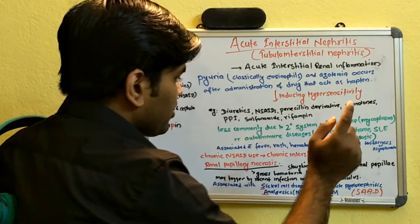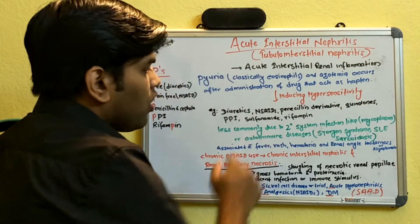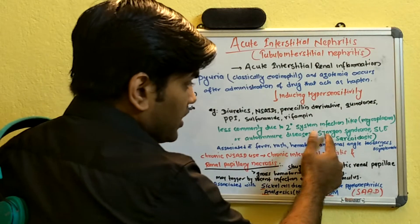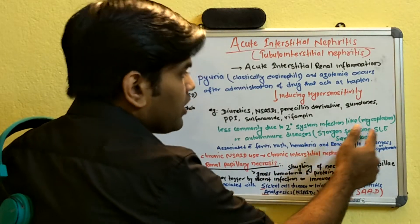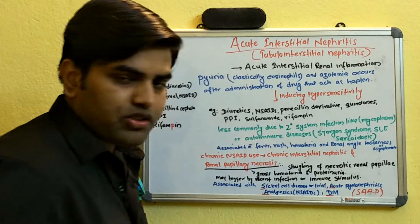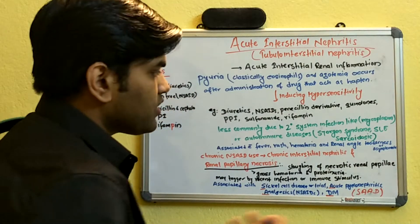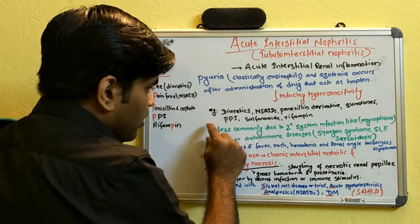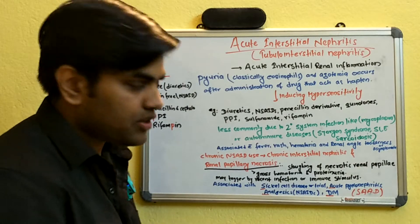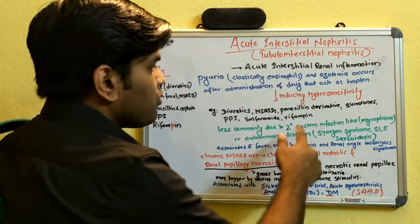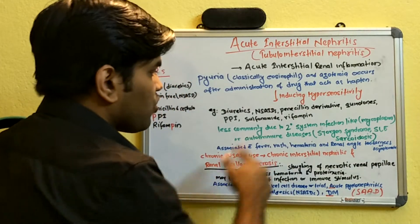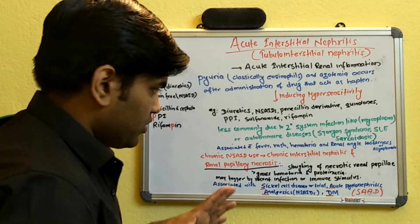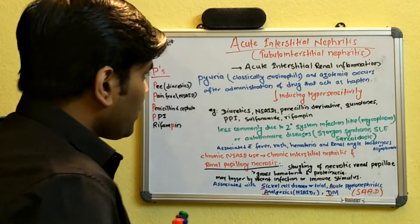Less commonly, acute interstitial nephritis can occur secondary to systemic infections such as Mycoplasma, or autoimmune diseases such as Sjögren's syndrome, systemic lupus erythematosus, and sarcoidosis. So the condition is not caused only by drugs; it can also arise from infections and autoimmune conditions, though this is less common.